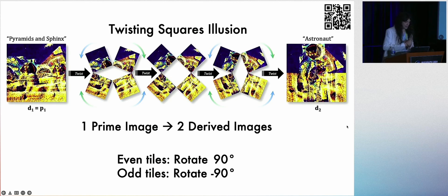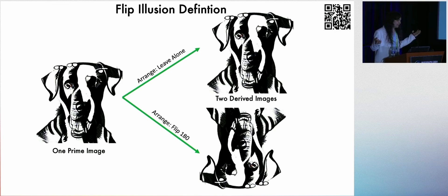The twisting squares, we slice an image into tiles, and the arrangement is that we turn every even tile 90 degrees, and every odd tile the other direction. And again, these can be 3D printed. And the last type, the flip illusion, we take one prime image, and it turns into two derived images. One is just leaving it alone, and the other is we flip it upside down.